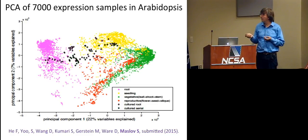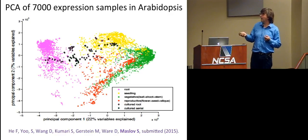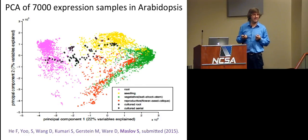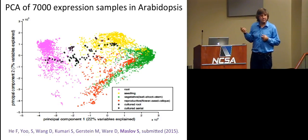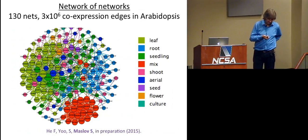And this is very useful for us not only because it allows us to classify the data, but it also allows us to recover some of the missing labels. So if you'll see a sample which people who did the experiment forgot to annotate, and that happens all the time, and seeing that it's right in the middle of this leaf shoot and stem part of the diagram, we can tentatively annotate it as this tissue. So that's how we can recover some of the missing information, which is a great problem.